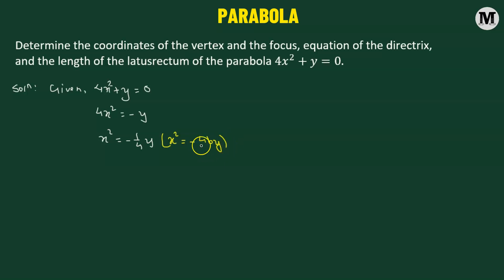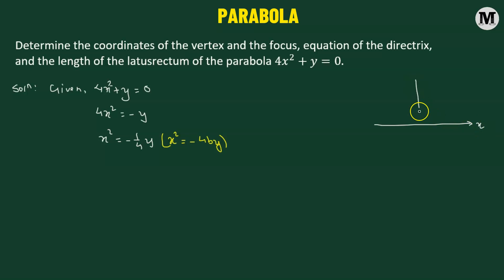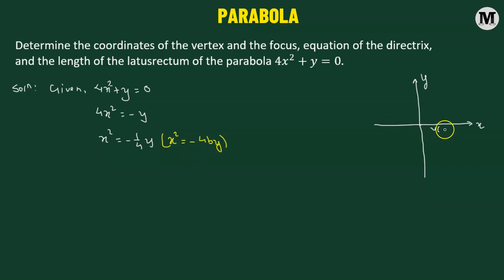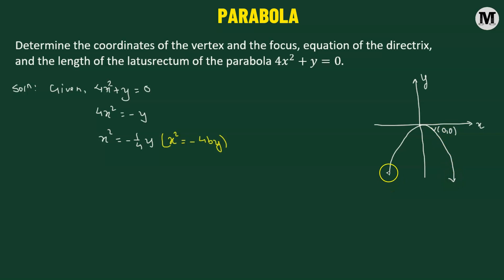Now let's graph the parabola x squared equals negative 4py. We consider the x-axis and the y-axis. A parabola with the equation x squared equals negative 4py has its vertex at the origin, that is (0, 0), and the negative sign tells us it opens in the downward direction. So it is a downward-facing parabola.